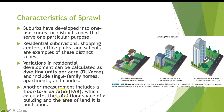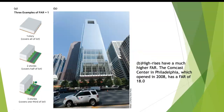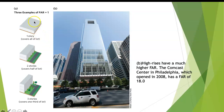Another measurement is floor-to-area ratio, called FAR, which calculates the total floor space of a building relative to the area of the land it is built upon. For example, the Comcast Center in Philadelphia has a FAR of 18 — much higher than a one-story building, which is only 1.0.